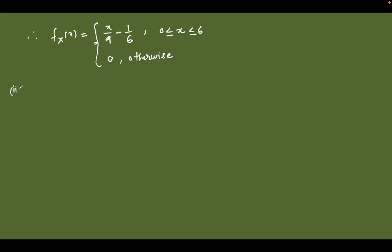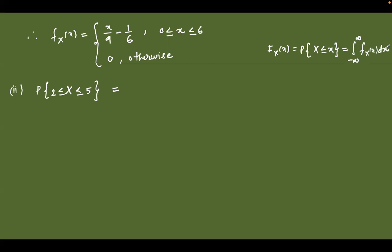For the second part, we need to calculate the probability of the random variable X defined between 2 to 5. We use the formula: the probability distribution function F(x) = P(X ≤ x) = integral from minus infinity to infinity of f(x) dx. So this becomes the integral from 2 to 5 of (x/9 − 1/6) dx.